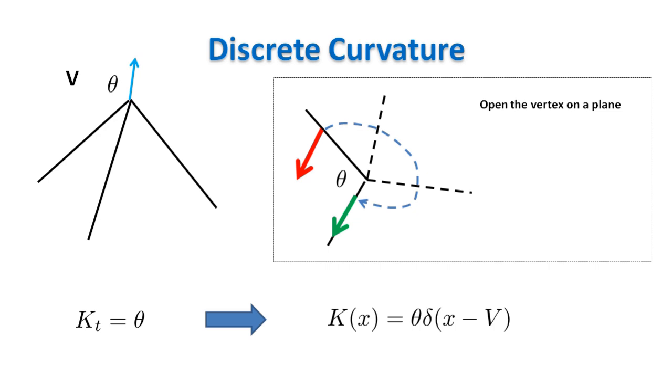As always happens in maths and physics, when we go from a density distribution in space of a given physical quantity to a discrete distribution, we have to go from smooth functions to Dirac delta functions. Thanks for watching.